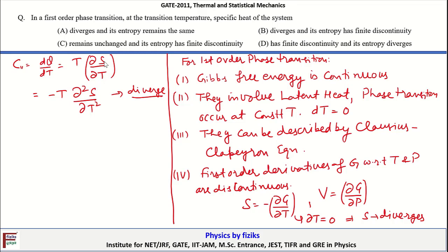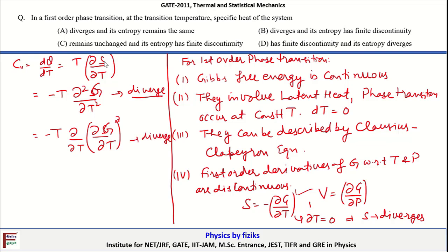In a first-order transition, the order is determined by the lowest-order derivative that is discontinuous at the transition point. Since it is a first-order phase transition, the first-order derivatives of G with respect to T and P are discontinuous, and higher-order derivatives are also discontinuous. Therefore the specific heat diverges, and option B is the correct answer.